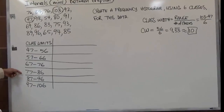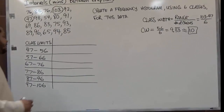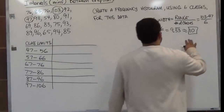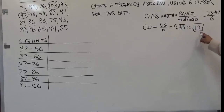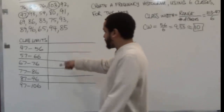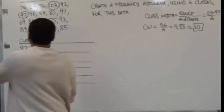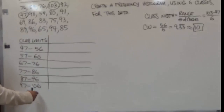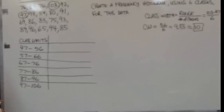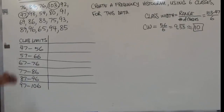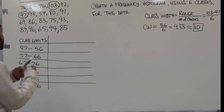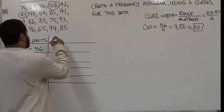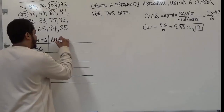There we have our six classes, which work perfectly for the class width. If you don't use this exact value you will not get the same results. The highest value just falls in the last class. Once we create our class limits, the next thing we do is create our boundaries.